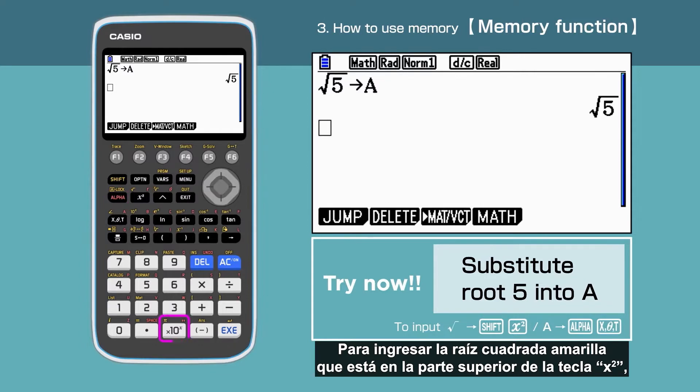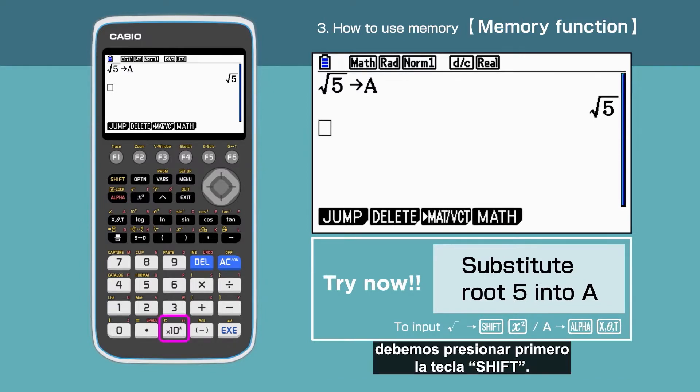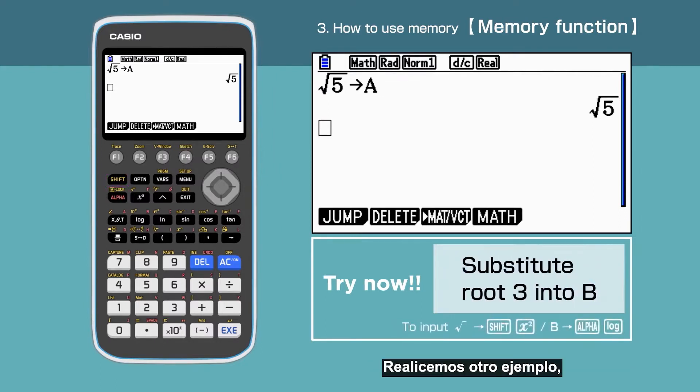To select the root in yellow above the X squared key, we will have to first enter Shift. Let's try another example. This time, we substitute root 3 into B.